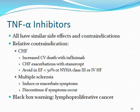All TNF-alpha inhibitors share similar side effects and contraindications. A relative contraindication is CHF: infliximab showed increased cardiovascular death risk, and etanercept showed CHF exacerbations. They recommend avoiding these agents with ejection fraction below 50% or class III/IV heart failure. With MS, these agents may induce or exacerbate symptoms. All TNF-alpha inhibitors carry a black box warning for lymphoproliferative cancer.